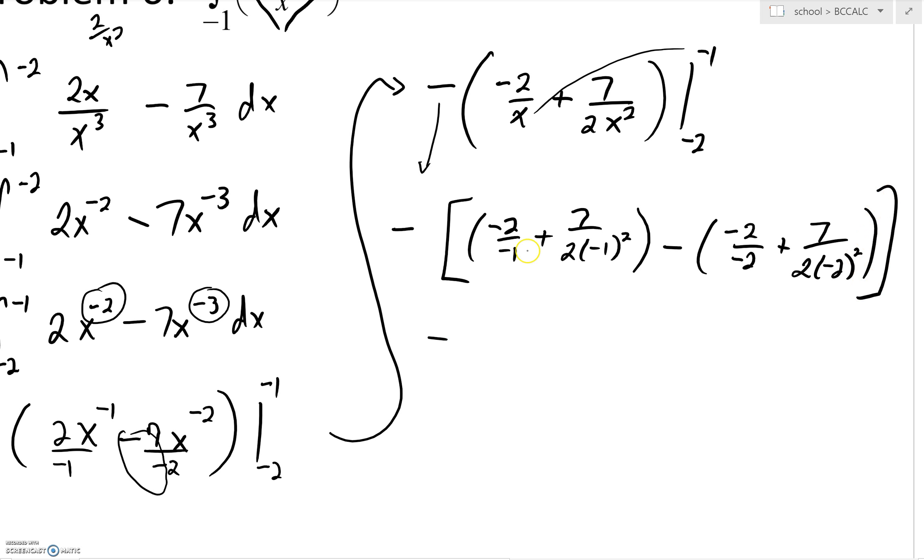And now we just have to clean it up. Negative 2 over negative 1, of course, is just a 2. Negative 1 squared right there is just going to turn into a positive 1. So we have this.